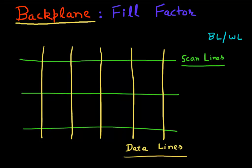At the intersection of these scan line and data line is located this control circuitry. This consists of anywhere between one to six thin film transistors and it can consist of a few capacitors as well.